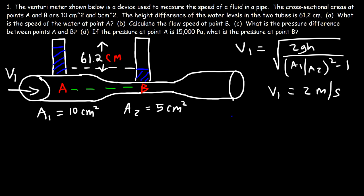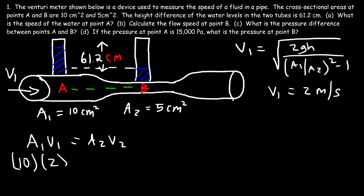Now let's calculate the flow speed at point B. Using the continuity equation A1·V1 = A2·V2: A1 is 10, V1 is 2 meters per second, and A2 is 5. So V2 = (10 × 2) / 5 = 20 / 5 = 4 meters per second. The flow speed at point B is 4 meters per second.